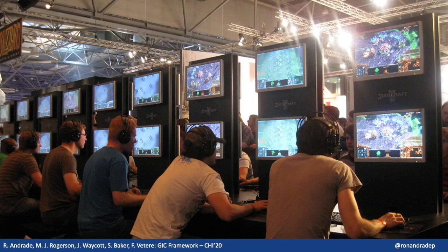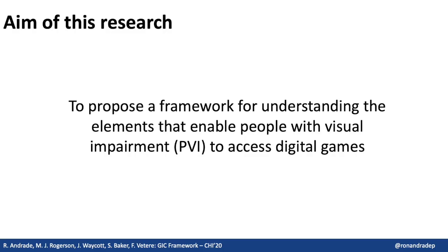With an estimated 2.5 billion video gamers around the world, gaming is well established as a social and cultural phenomenon. But the visual nature of digital games, embodied literally in the name 'video games,' renders them mostly inaccessible to people with visual impairment. In this paper we propose a framework for understanding the elements that enable people with visual impairment to access digital games. Unlike previous research on games for people with visual impairment, we have not focused on a single game. Rather, we have worked together with people with visual impairment to identify the key elements that enable access to digital games. This fosters a rhetoric of empowerment and recognises the unique skills that people with visual impairment develop through their lived experience.